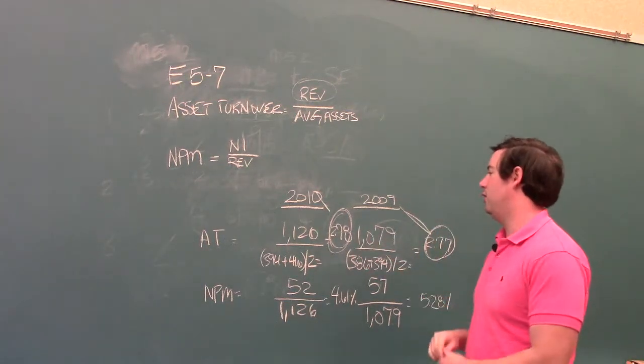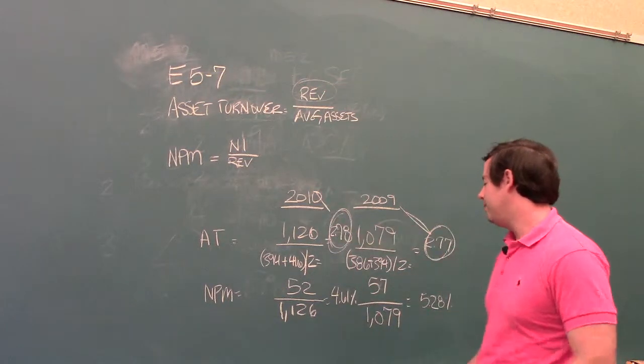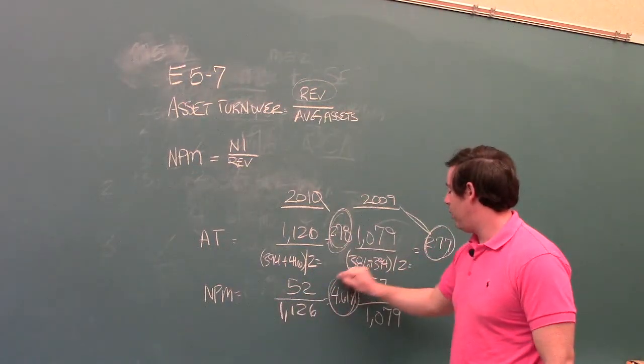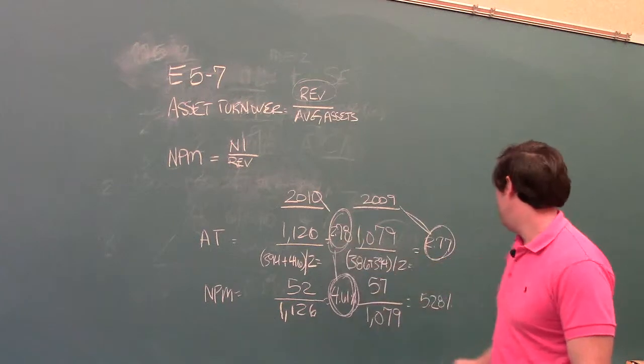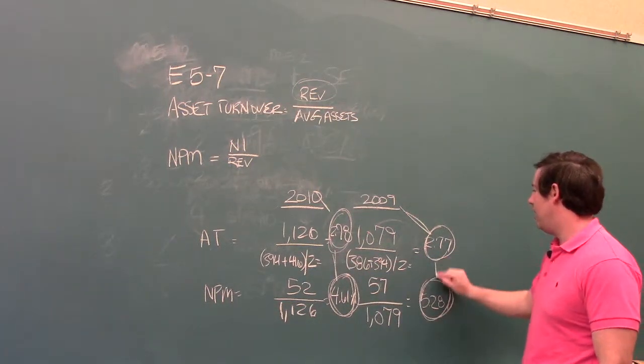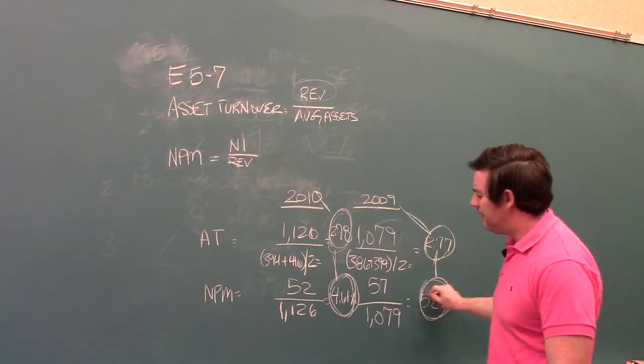There's a modest increase in 2010. If we look at the net profit margin ratio, we see 4.61 in 2010 and 5.28 in 2009. This is a big swing.